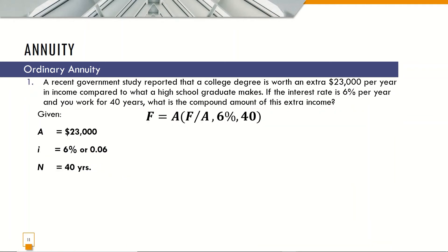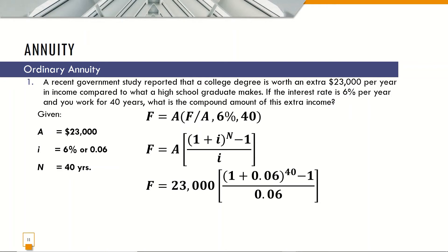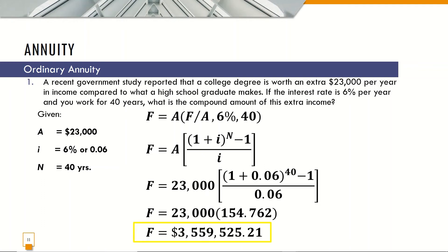Using the formula, F is equal to A times the symbol F given A at 6% and 40 interest periods, or (1 plus i) raised to n minus 1 over i. With A equal to $23,000 times (1 plus 0.06) raised to 40 minus 1, all over 0.06, the quantity results to 154.762, so F is equal to $3,559,525.